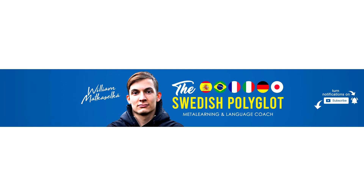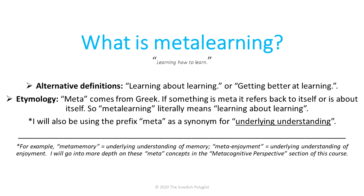So, starting with: what is meta-learning? The word meta, or the prefix meta, comes from Greek. If you have meta in front of a word, it means that the preceding part sort of refers back to itself. So for example, meta-learning would be learning about learning. I would also say that meta refers to something underlying, so meta-learning has to do with an underlying understanding of the learning process. That's basically what meta-learning is — just getting better at learning, learning how to learn, making the process of learning more effective, more efficient, more enjoyable and so on.